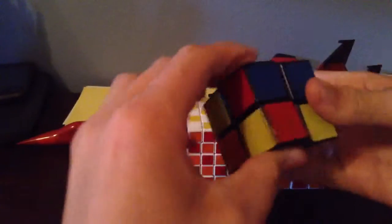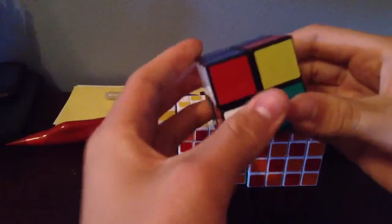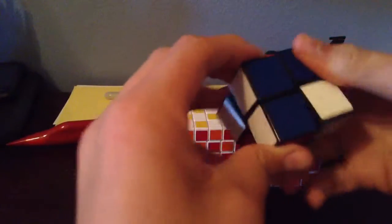Right, down. Right inverted, down inverted, right, down. There you go. Move that one over, repeat the step, and you're done. That's how you solve a 2x2 Rubik's Cube. Bye.